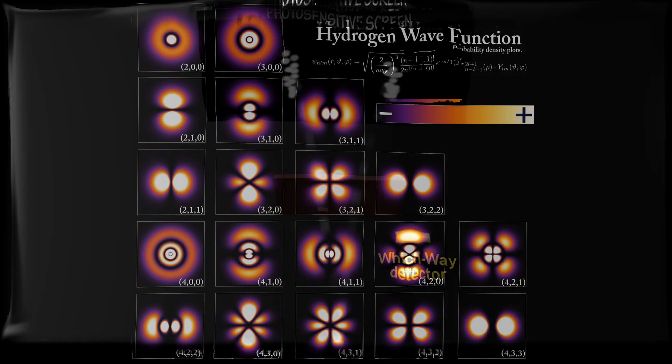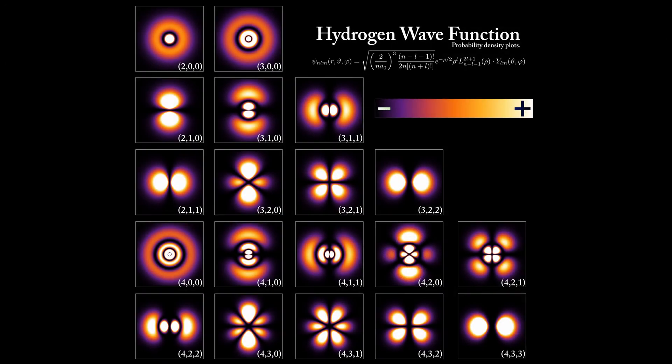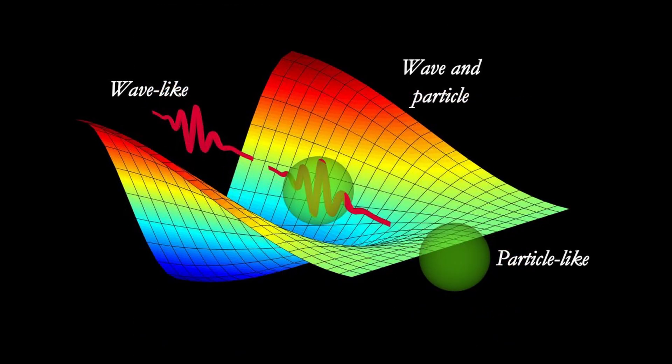If we see, by using classical mechanics, we cannot describe such phenomenon. A new branch of physics was born that is quantum mechanics. From this experiment, they have concluded that light is not just a particle, but it's also a wave, most commonly known as wave-particle duality.